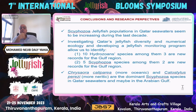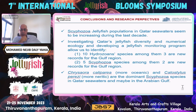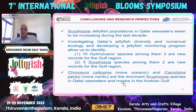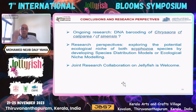In conclusion, scyphozoan jellyfish populations in Qatar seawaters seem to be increasing during the last decade, though we need longer time series and more investigation. Our investigation identified at least 10 hydrozoan species — three new records for the Gulf region — and five scyphozoan species, two of which are new records for the Gulf region. Both Chrysaora caliparea, which is more oceanic, and Catostylus perezi, which is more neritic, are the dominant scyphozoan species. The dynamic is somewhat similar to comparing Pelagia noctiluca and Rhizostoma in the Mediterranean.